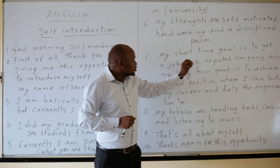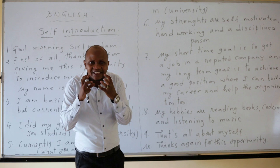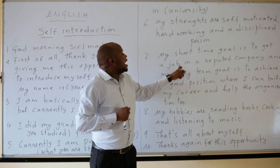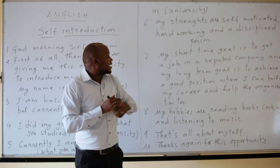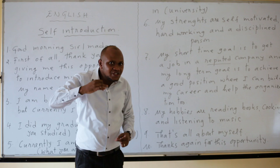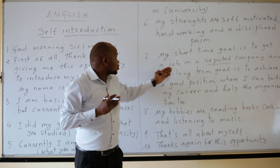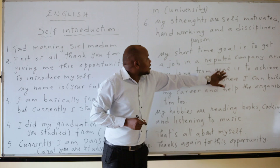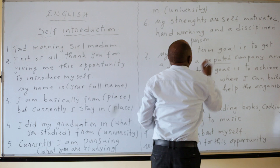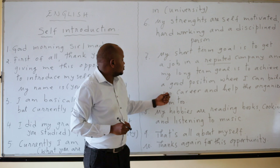Step number seven: you say your short-term goal. My short-term goal is to get a job in a reputed company — a company that is trusted and famous. That is the short-term goal of this person. Then you move to your long-term goal.